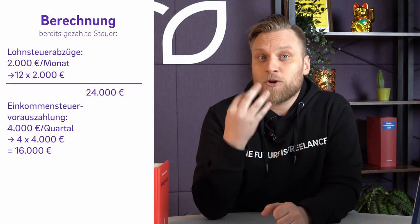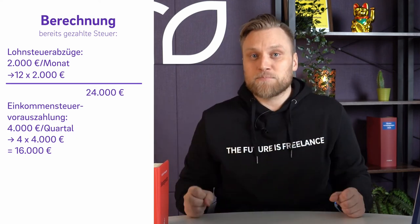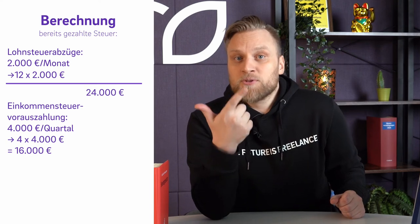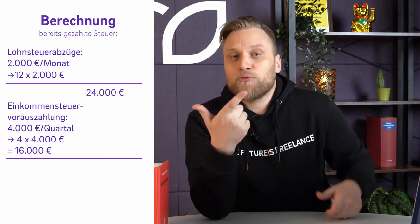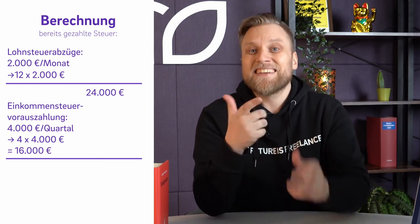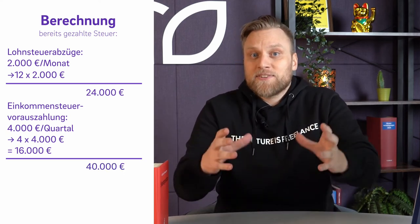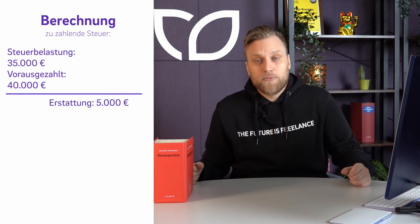Some self-employed people will also know that there are quarterly advance payments for income tax. Self-employed people do not have income tax deductions from a paycheck, so they must make quarterly advance income tax payments. If I pay 4,000 euros four times in one year in advance income tax, that is 16,000 euros in advance payments. Combined with the 24,000 euros already paid, that is a total of 40,000 euros in tax payments. If the tax assessment arrives showing taxable income of 100,000 euros — resulting in a tax burden of 35,000 euros — and 40,000 euros have already been paid in advance, this results in a tax refund of 5,000 euros.